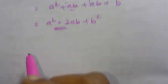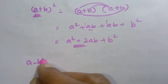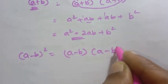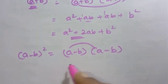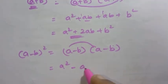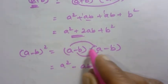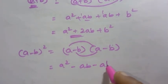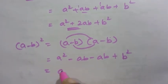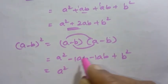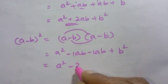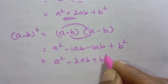Now let's derive a minus b the whole square. We write a minus b into a minus b. Then: a into a is a squared, a into minus b gives minus ab, minus b into a gives minus ab, and minus b into minus b gives plus b squared. So the result is a squared minus 2ab plus b squared.